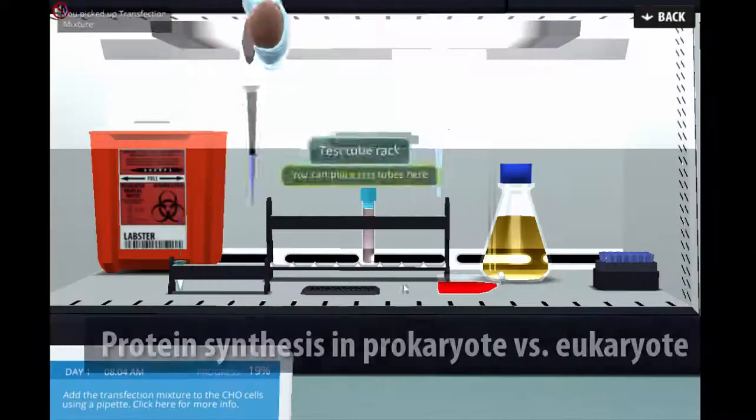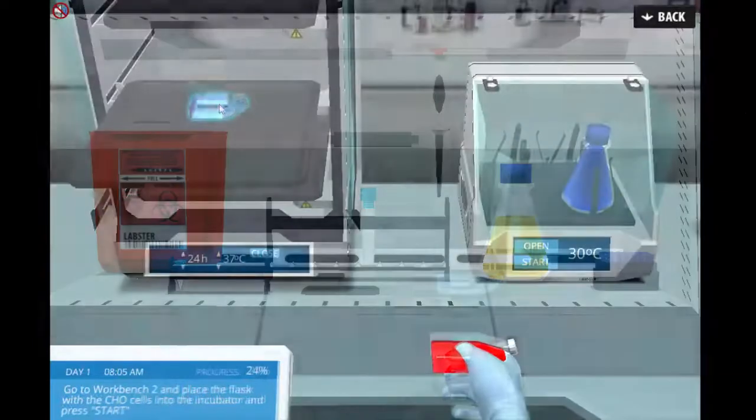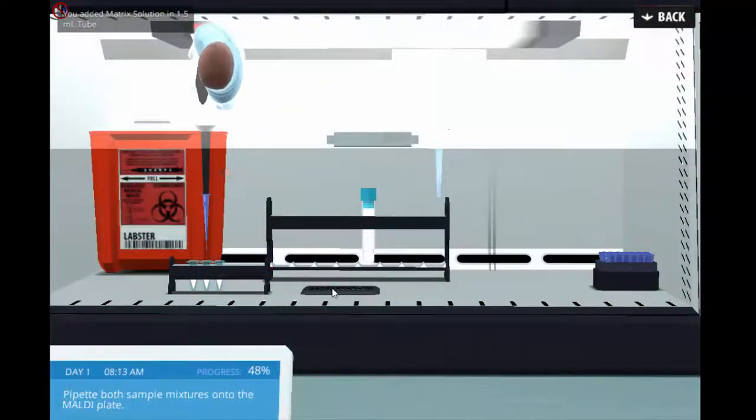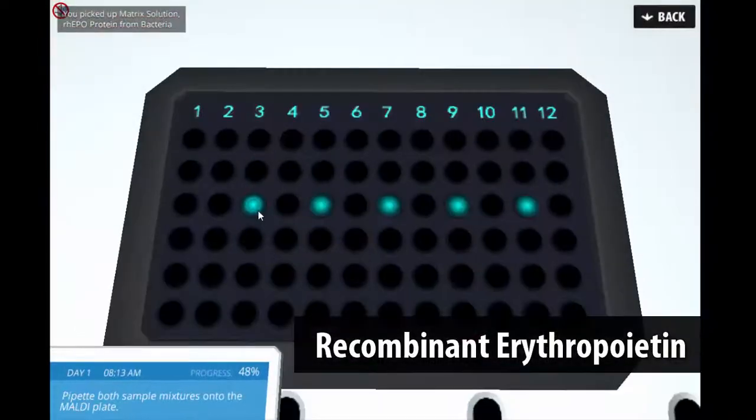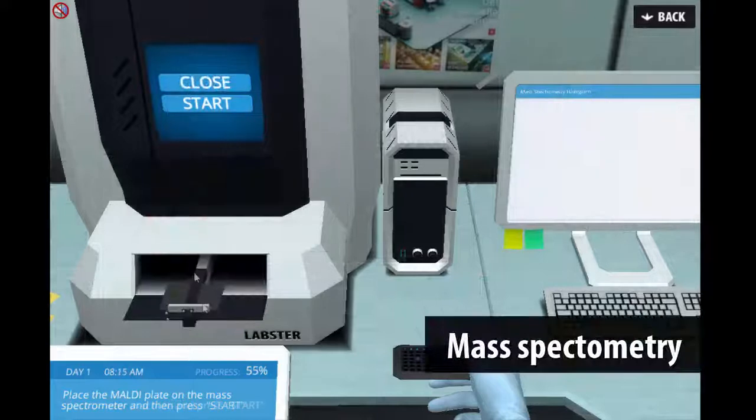The virtual lab starts by asking the students to prepare recombinant erythropoietin that is transfected into E. coli and CHO cells. The lab assistant will prepare the recombinant EPO, and students would be able to measure the mass-to-charge ratio using a mass spectrometer.